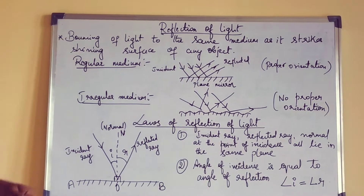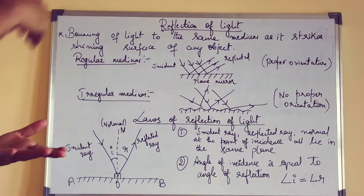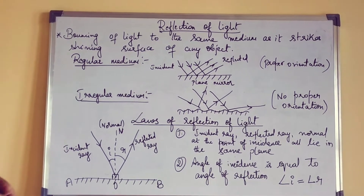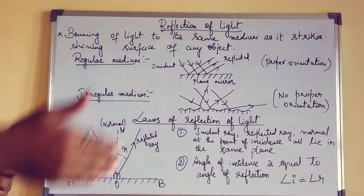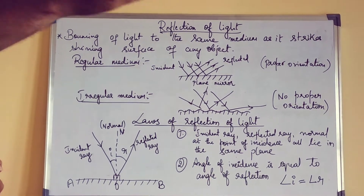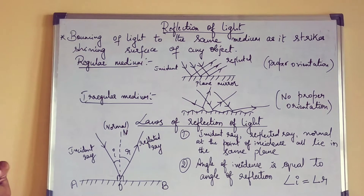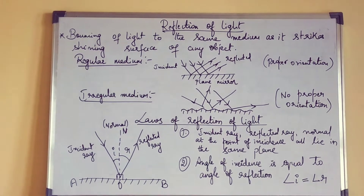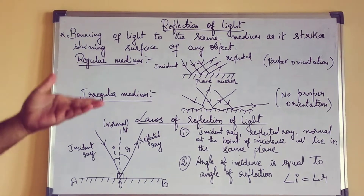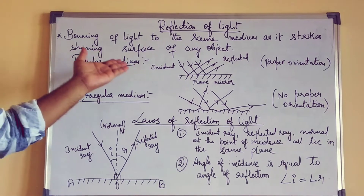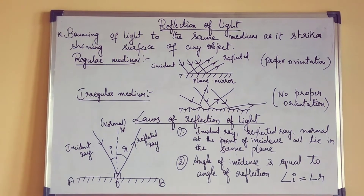It is a simple definition. If there is one medium and the light goes and hits a shining surface or an obstacle and it gets bounced back to the same medium, that is known as reflection. Bouncing of light to the same medium as it strikes the shining surface of any object is called reflection.